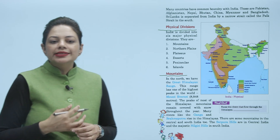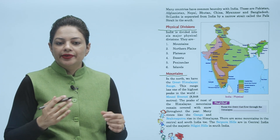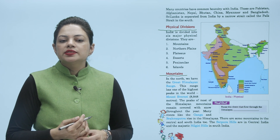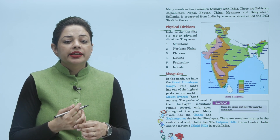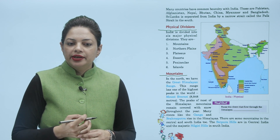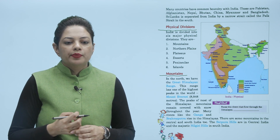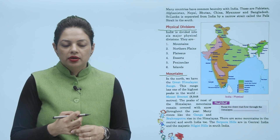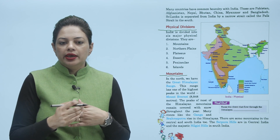In the north, we have the Great Himalaya range. This range has one of the highest peaks in the world — Mount Everest, with a height of 8,848 meters. The peaks of most of the Himalayan mountains remain covered with snow throughout the year.